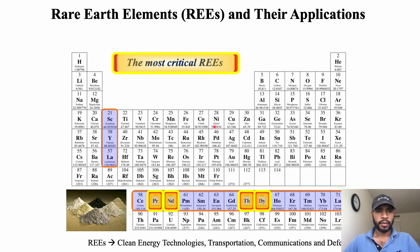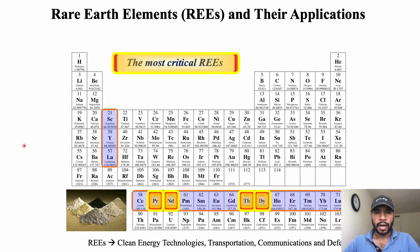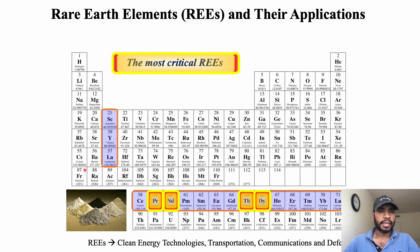Hello everyone. In this video I'm going to explain what rare earth elements are and their applications. Rare earth elements are a set of 17 metallic elements. These include 15 lanthanide metals plus scandium and yttrium.